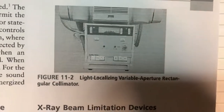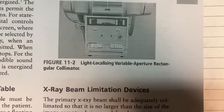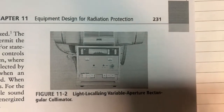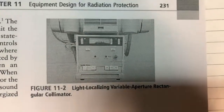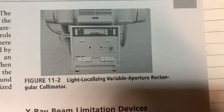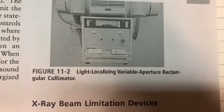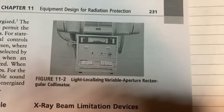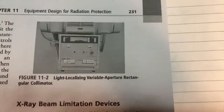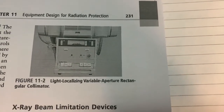Here is a picture of a light localizing variable aperture rectangular collimator, which is used to limit the X-ray beam. As part of the ALARA principle, scattered radiation should be limited throughout the body to only the specific areas where we need to take the X-ray.